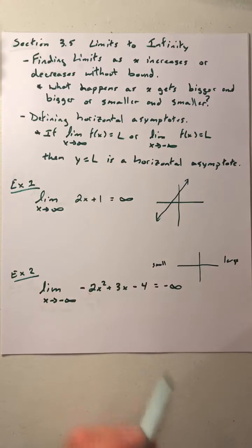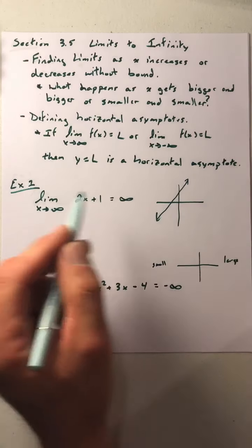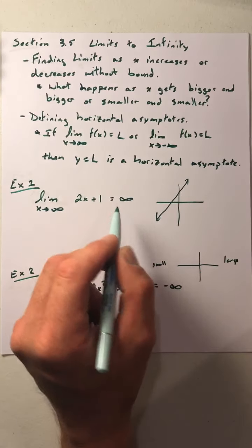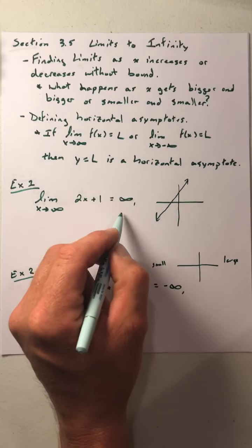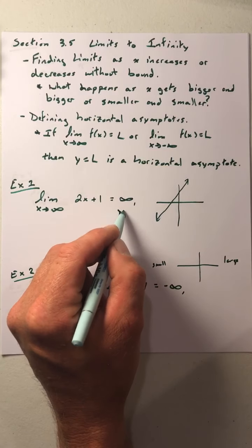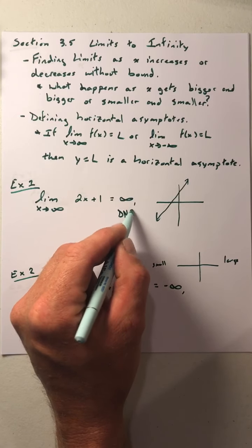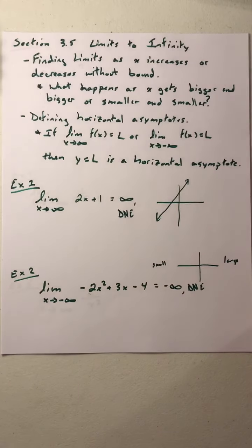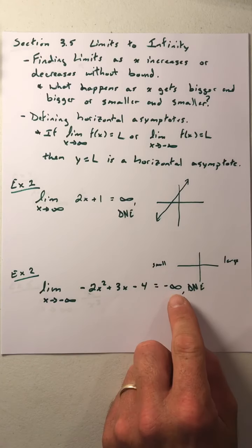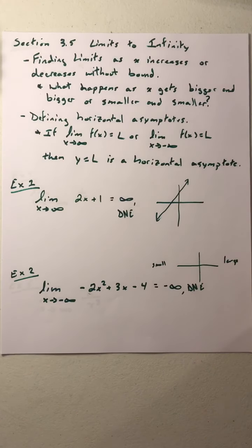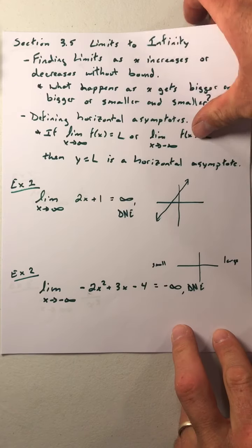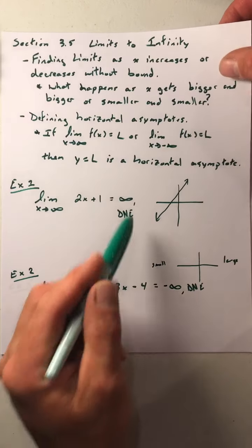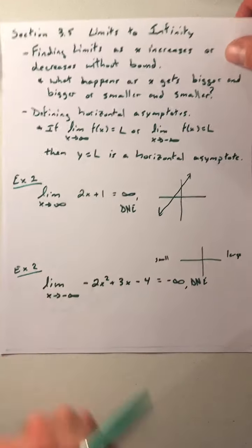Remembering with both examples 1 and 2, when we have an infinity or a negative infinity, we're also going to note that the limit does not exist. But we are interested in knowing which it is — positive infinity or negative infinity — so I want to see both of those notations.